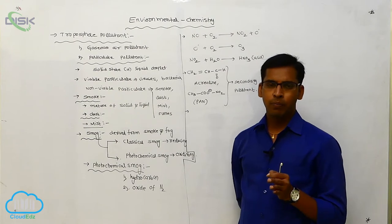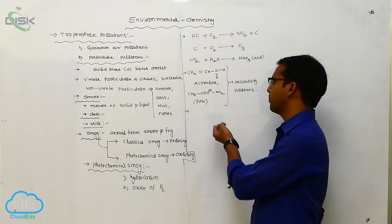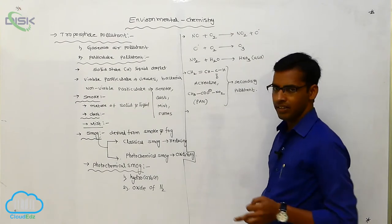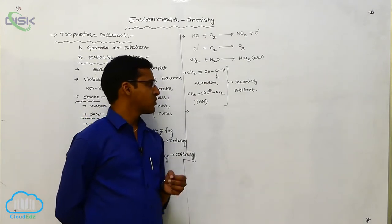And primary pollutants are there and secondary pollutants. The secondary pollutants are acrolein and peroxyacetyl nitrate, CH3COO minus NO2 plus.